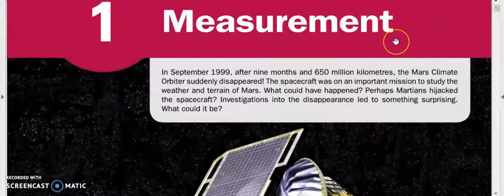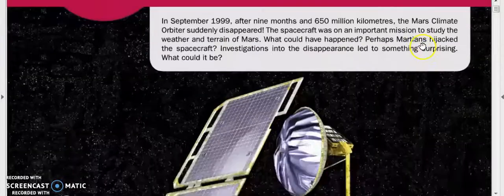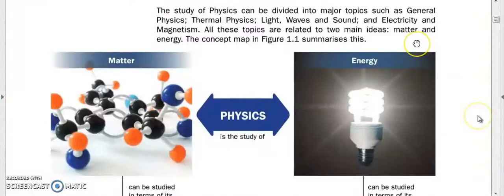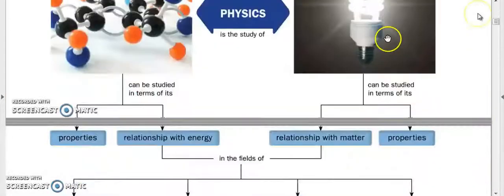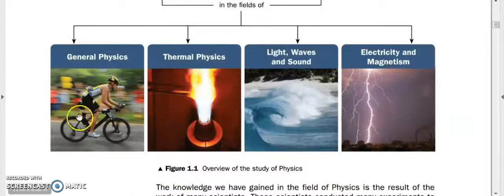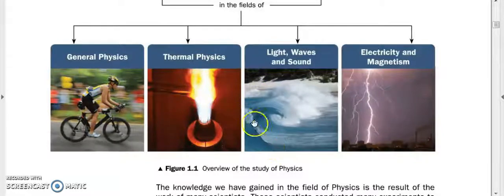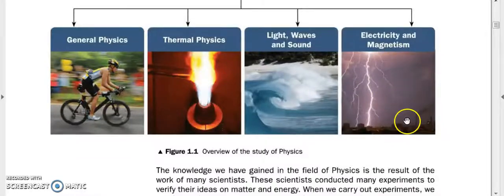Hey guys, welcome to the summary video on Chapter 1. Just a quick recap on measurements. What is physics? We've covered this before. Physics can be classified into four main categories: general physics involving motion, thermal physics involving heat, waves involving light and sound mainly, and electricity and magnetism, which is the final part of physics.